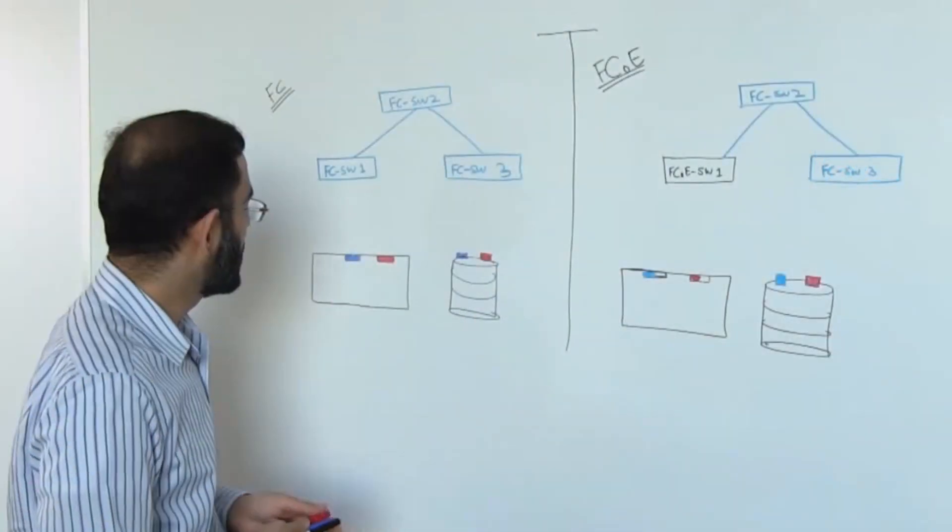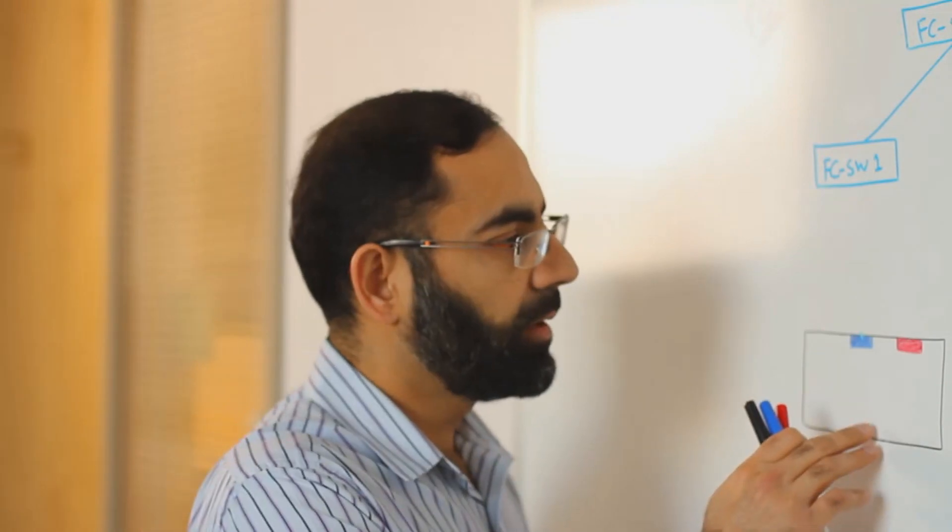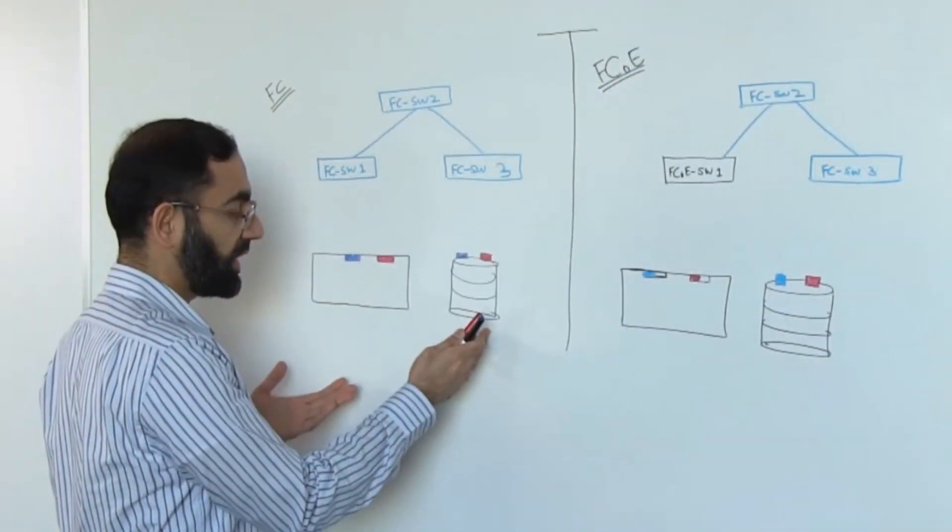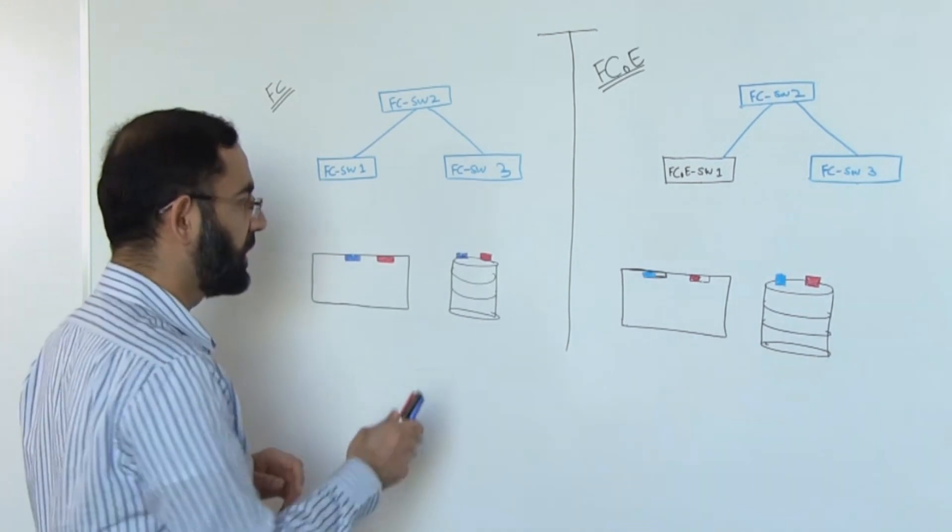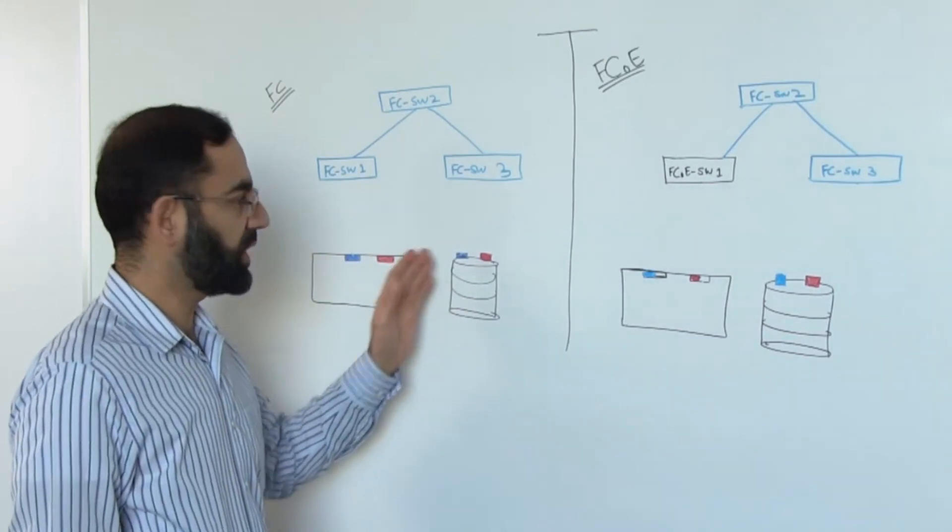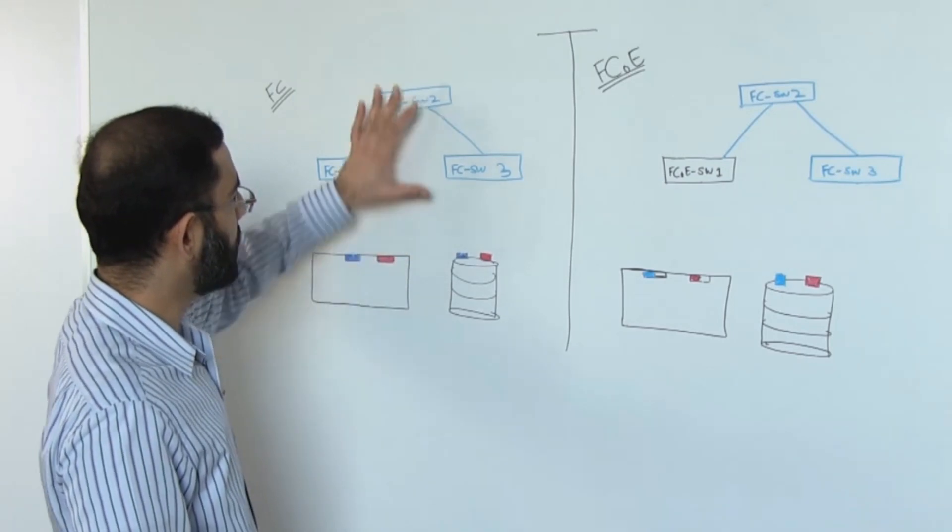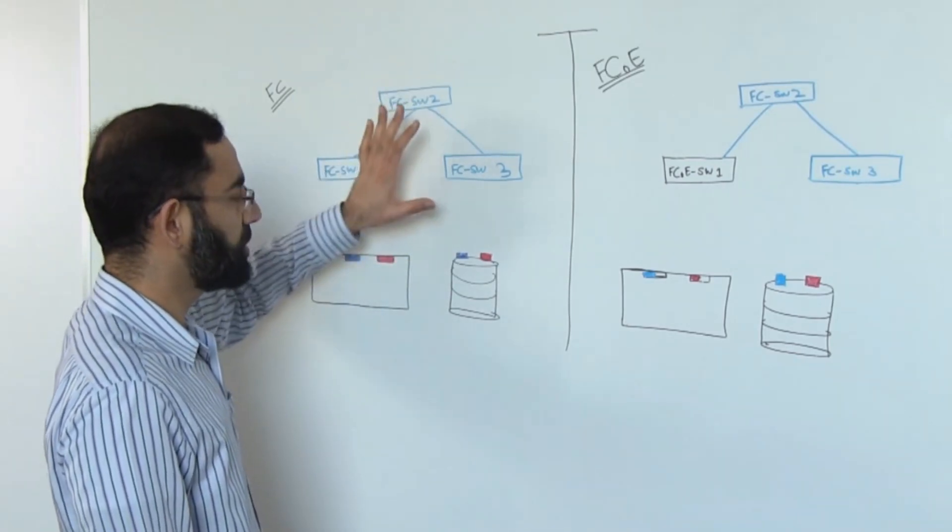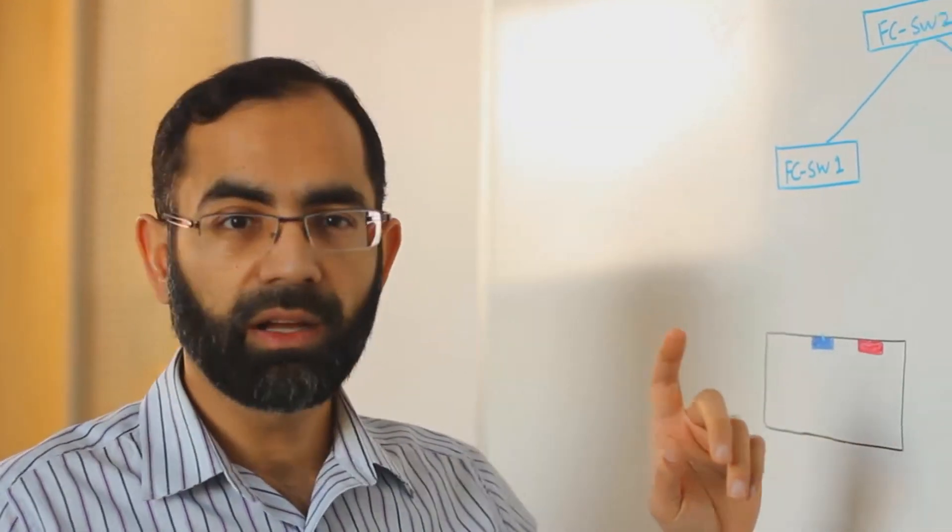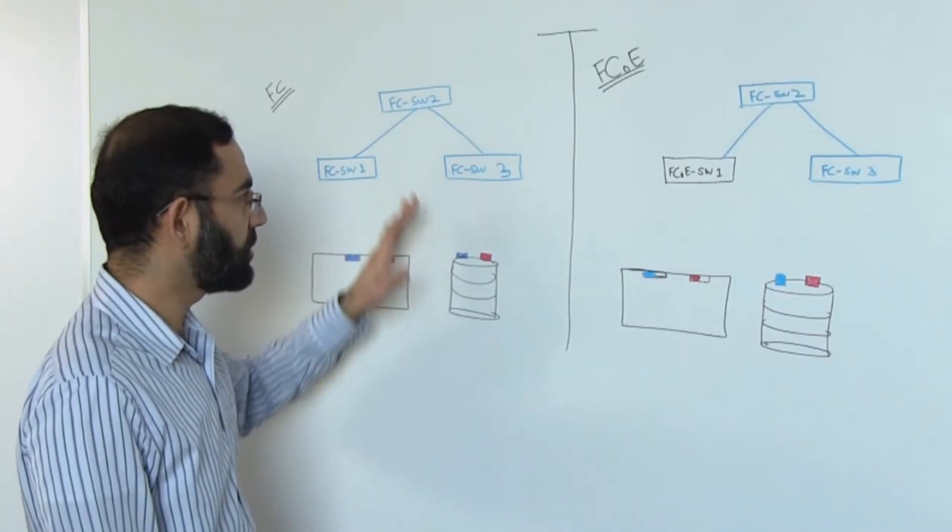Looking at the FC environment, we have a server. Just like in previous examples, I'm showing two HBAs colored in blue and red. We have a storage target or storage array that has been introduced in this picture as well. Storage, like a server, has two ports, one to connect to Fabric A and the other one to connect to Fabric B. I have only shown switches in blue color because I want to build out a single fabric. The second fabric or redundant fabric will look exactly like this one, so there's no point in complicating the picture.